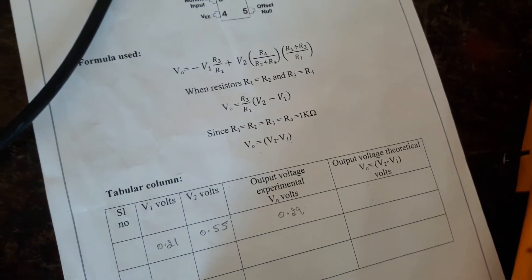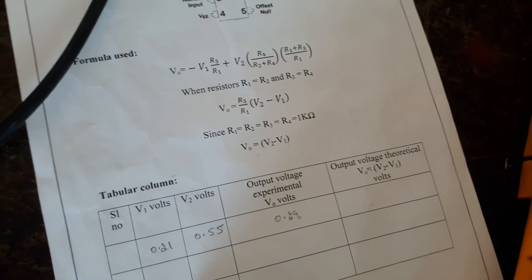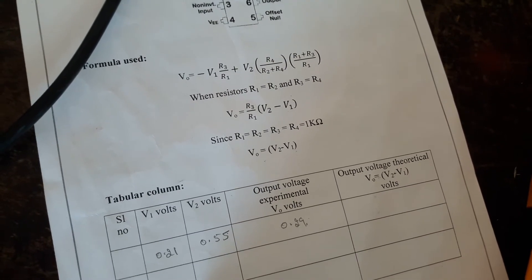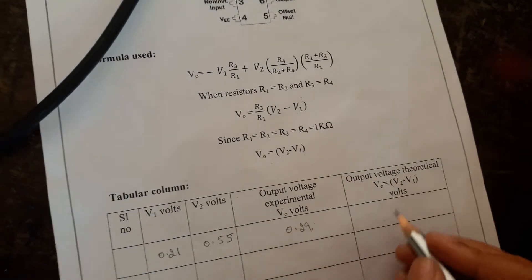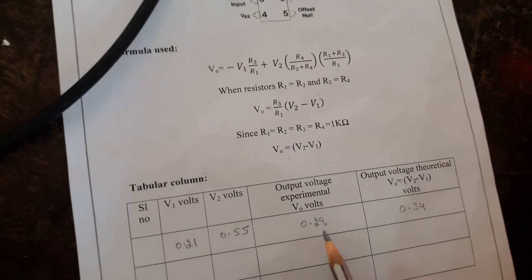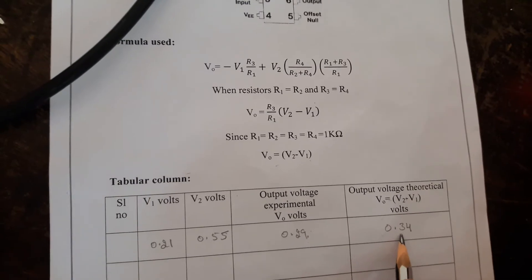Let me subtract these two readings, that is 0.55 minus 0.21. This will be around 0.34 we are getting it as a theoretical value. These two must be nearer to each other.